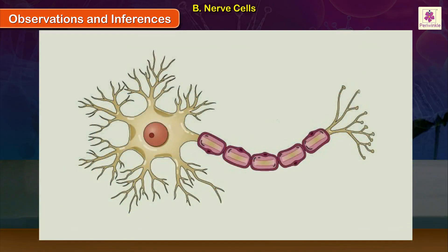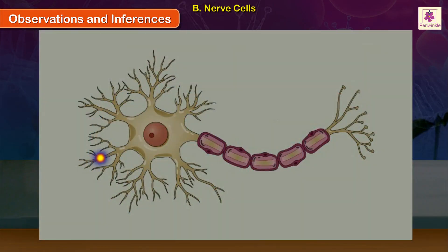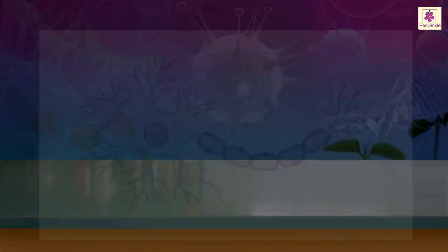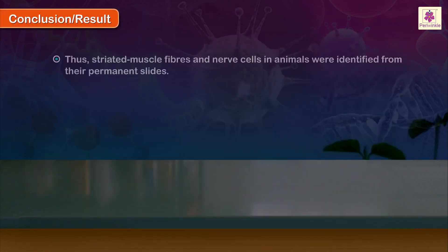A neuron conducts nerve impulses. Dendrites take the impulse to the cytone, while the axon takes it away from the cytone to the synaptic bulbs. Conclusion.